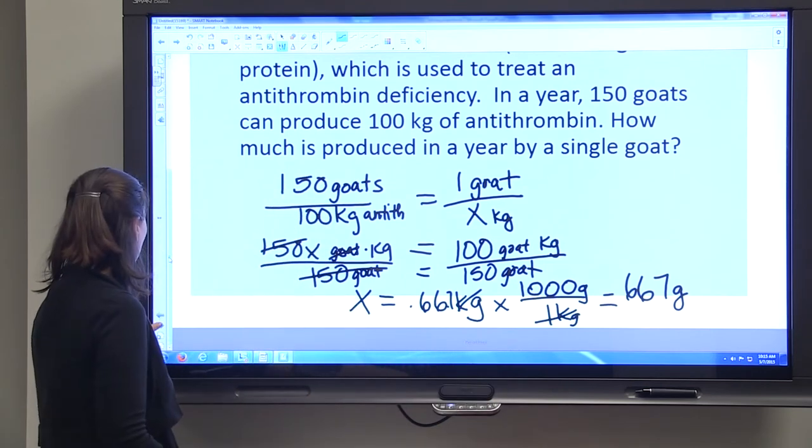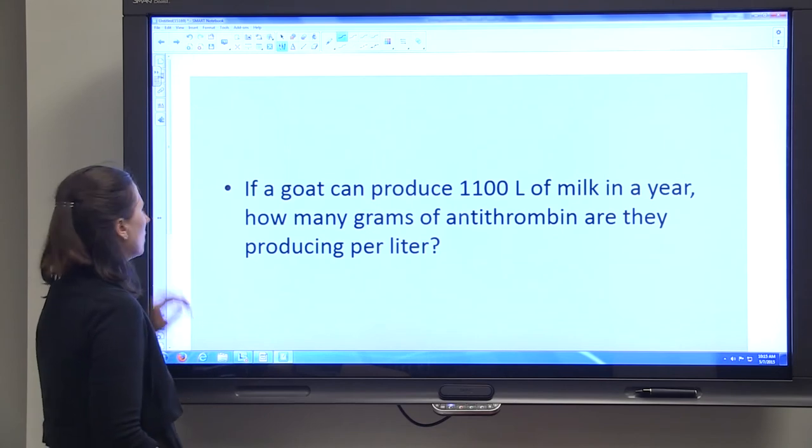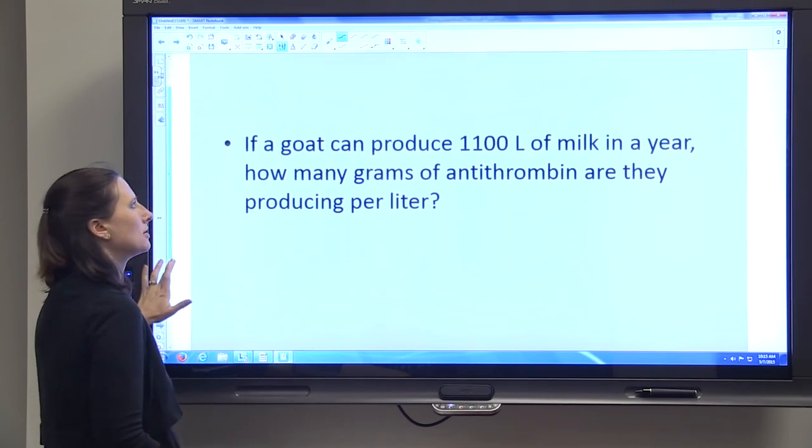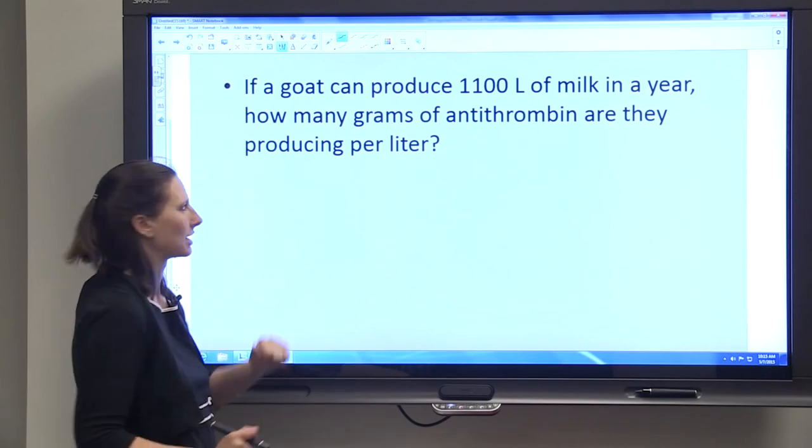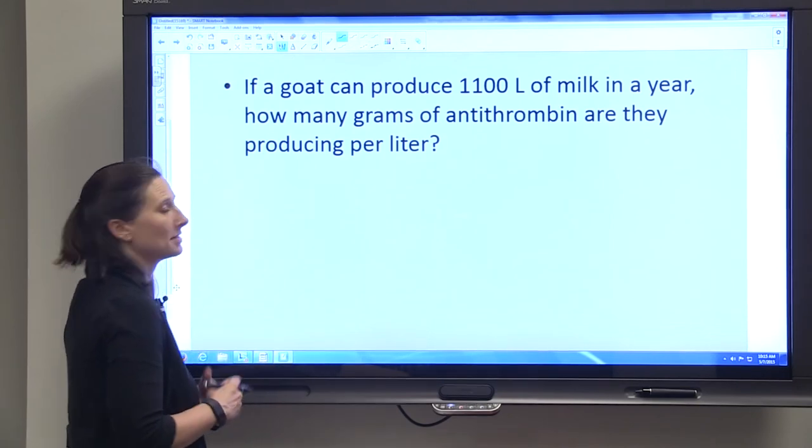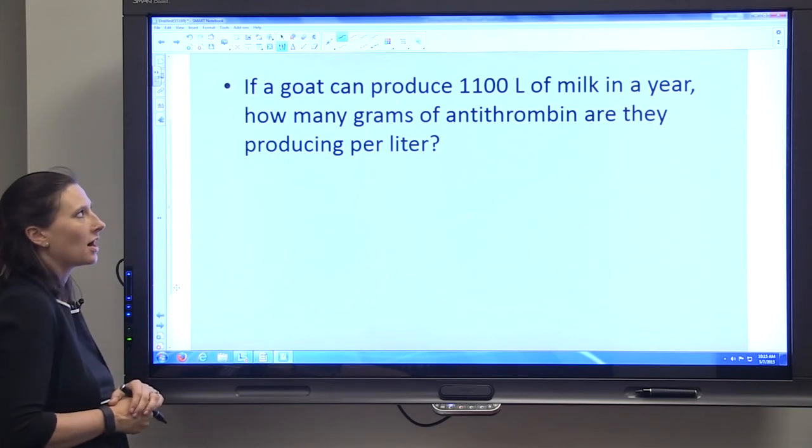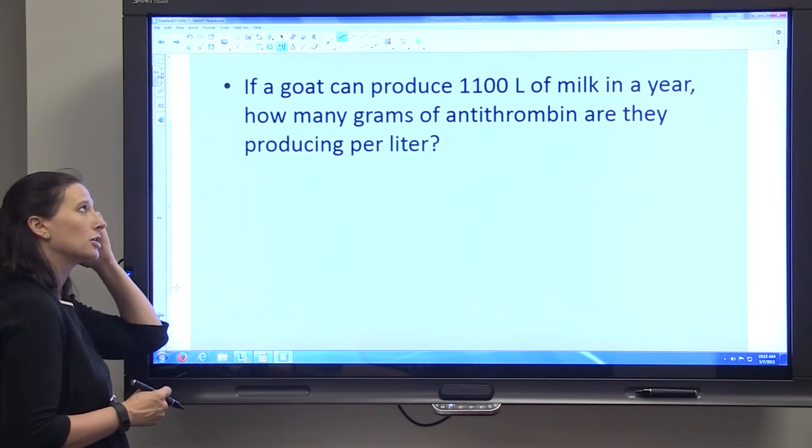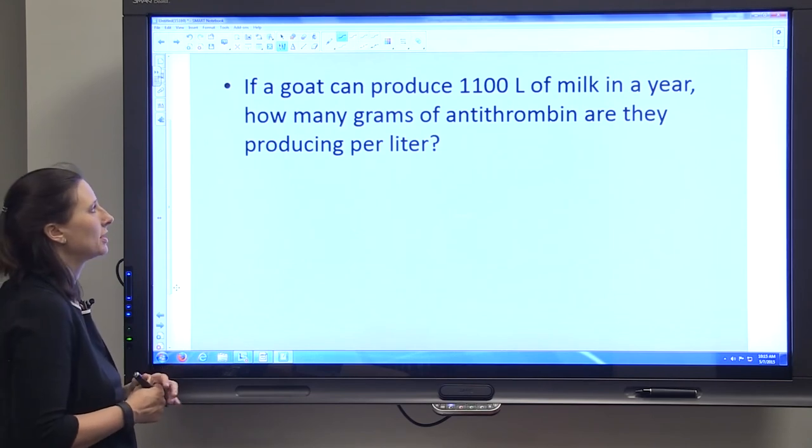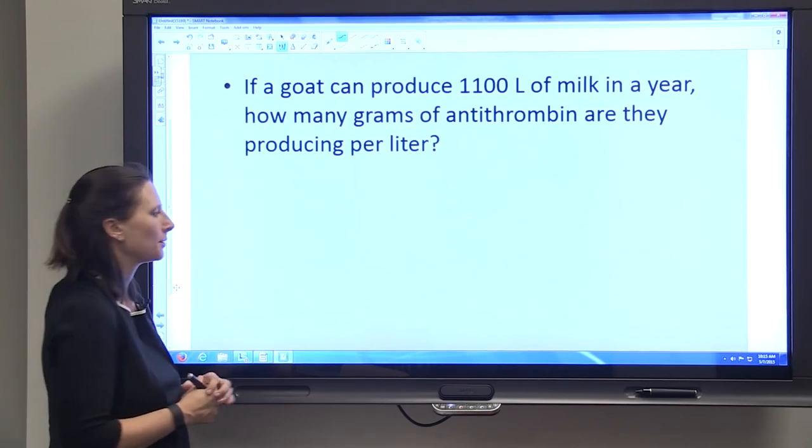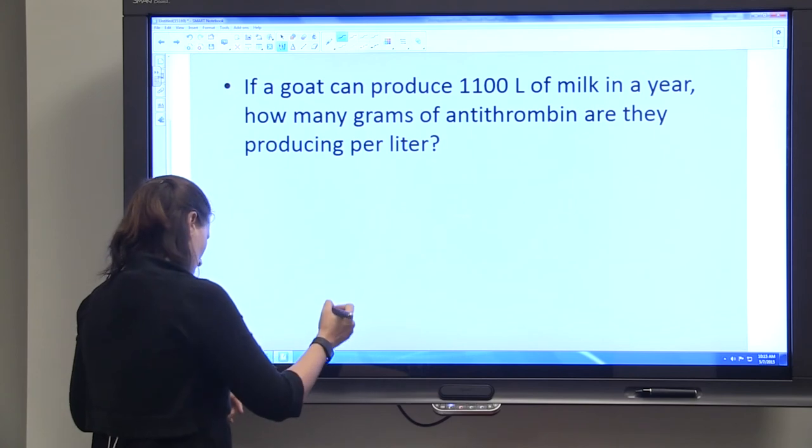Just like with the apple problem, if we have a second part of the problem, we may need to use that information to solve our second part. If a goat can produce 1100 liters of milk in a year, how many grams of antithrombin are they producing per liter?